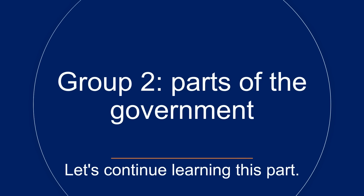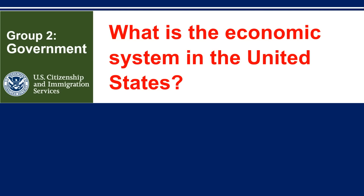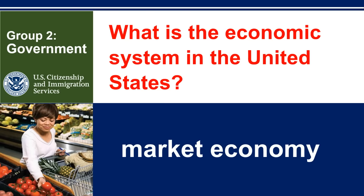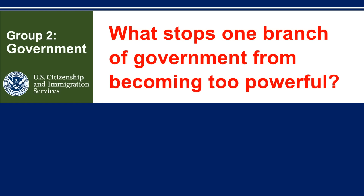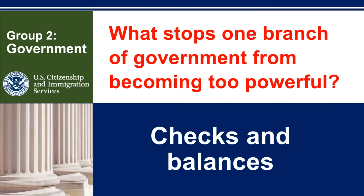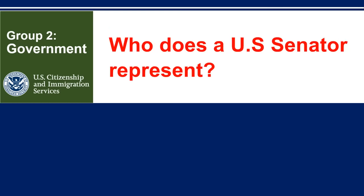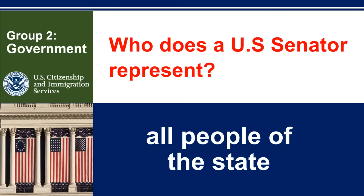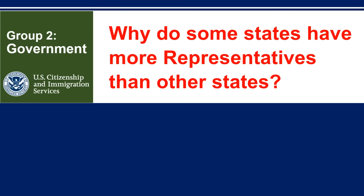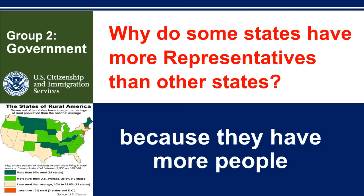Group 2: Parts of the Government. Let's continue learning this part. What is the economic system in the United States? Market Economy. What stops one branch of government from becoming too powerful? Checks and balances. Who does a U.S. Senator represent? All people of the state. Why do some states have more representatives than other states? Because they have more people.